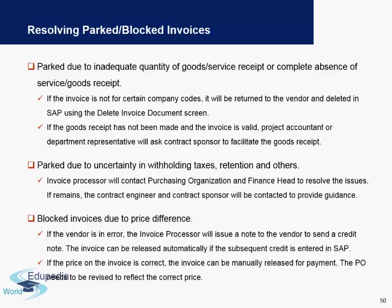If the goods received has not been made and the invoice is valid, the project accountant or department representative will ask the contract sponsor to facilitate the goods receipt. If parking is due to uncertainty with withholding taxes, the invoice processor will contact the purchasing organization and the finance head to resolve the issues. For blocked invoices due to price differences, if the vendor is in error, the invoice processor will issue a note to the vendor to send a credit note, or the invoice can be released automatically if the subsequent credit is already entered in the system. If the price of the invoice is correct, it can be manually released for payment and the purchase order needs to be revised manually to reflect the correct price.